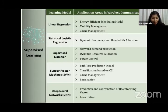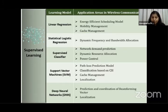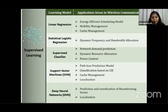Supervised learning is classified into classification and regression. Its use in wireless communication has been tested by many researchers, and it has been efficiently used in mobility management, cache management, mobile edge computing, and resource allocation. Support vector machines and deep neural networks are also useful in beamforming, localization, and path loss prediction. CSI detection from unobservable states can also be done from observed patterns using supervised learning.